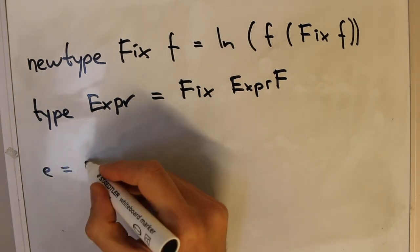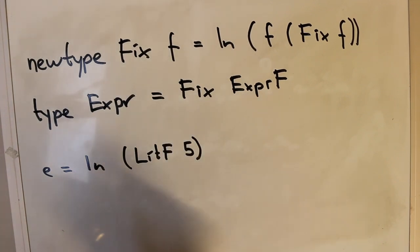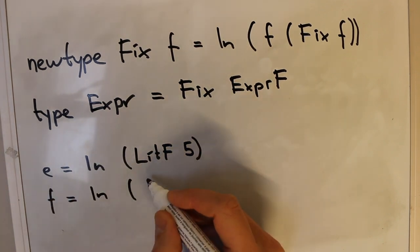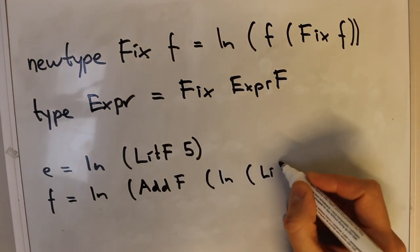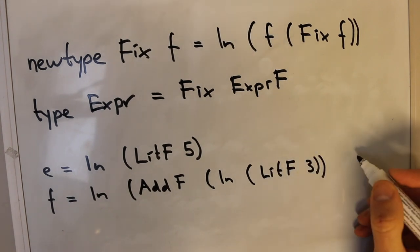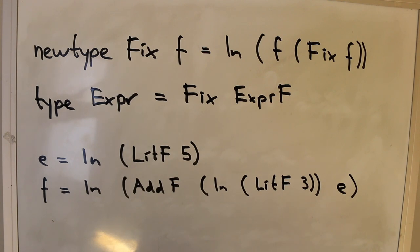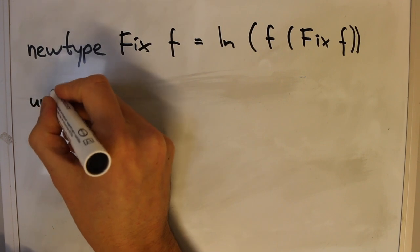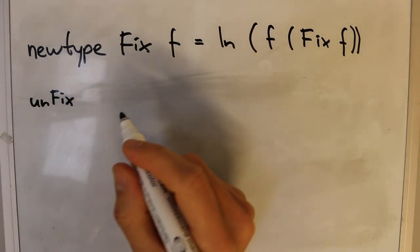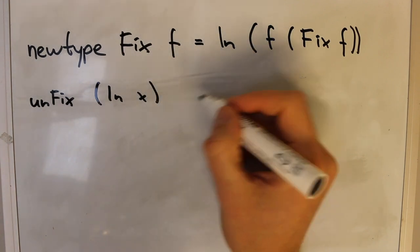We can also construct actual values of this Expr type. To construct a value for LitF 5 we simply wrap it in 'In' once. For Add we need to wrap the Add expression in 'In' and also wrap each of the literals. It becomes a little more cumbersome than our original presentation of Expr because we need to add this 'In' constructor in many places. There also exists a function called 'unfix' which takes a value of the recursive type and returns the associated value from the non-recursive type by peeling away one 'In' constructor.